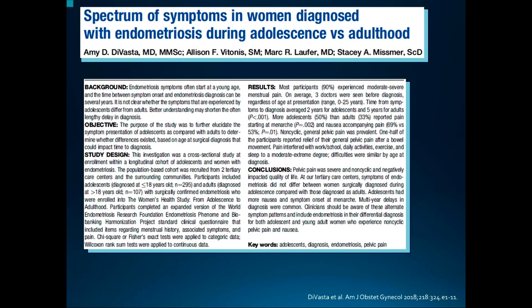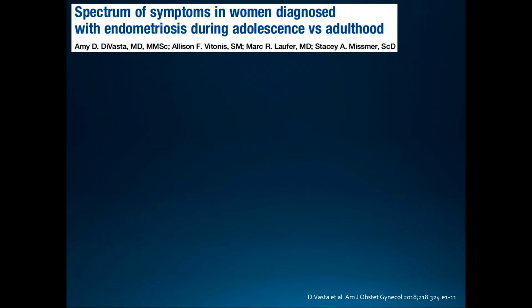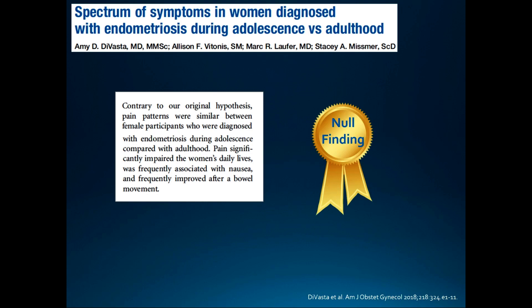The next example is from a paper in the American Journal of Obstetrics and Gynecology on symptoms of endometriosis in adolescence versus adulthood. Notice here that the authors are recapping results that went against their original hypothesis — they're referring to null results. Often null results are forgotten about or not reported, but they're important to report in the results and to discuss in the discussion, especially to address why the results were null.